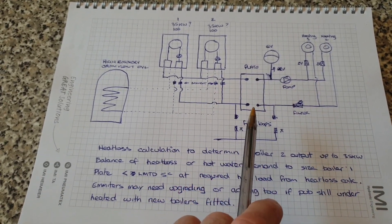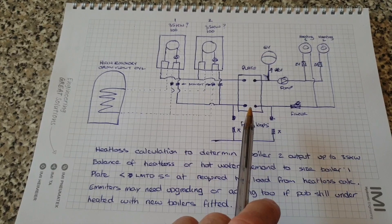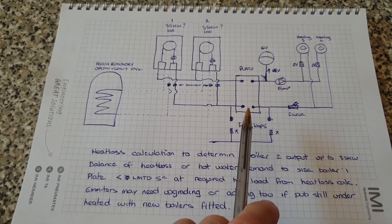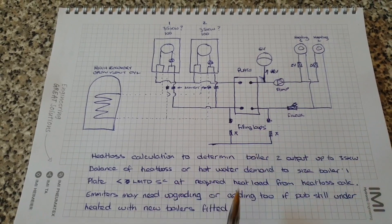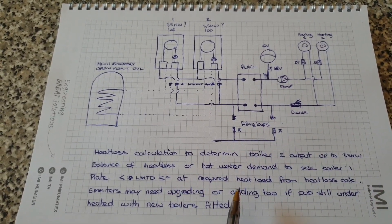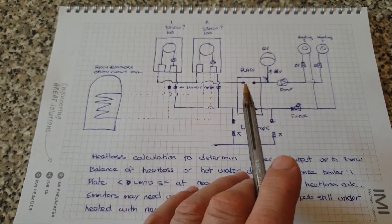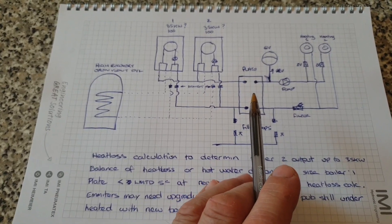And that's via a plate heat exchanger because this is a very old system and it's got galvanized pipes in there I believe. The chances of getting that clean enough to give any longevity to the boilers is pretty low, so we've plumped for the plate separation on this job.